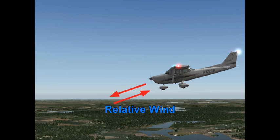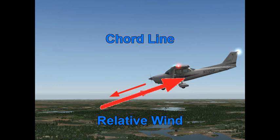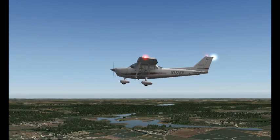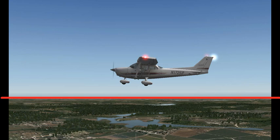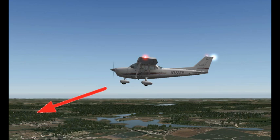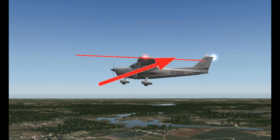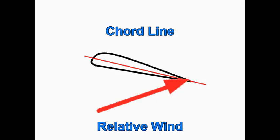The key thing to understand is that angle of attack is the angle between the cord line and the relative wind — not the attitude of the airplane. For instance, the airplane can be in a level attitude with the fuselage parallel to the horizon, but the plane can still be descending. In that case the angle of attack will reflect the descent. The biggest thing to remember is that the cord line angle relative to the wind can be completely separate from the attitude of the airplane.